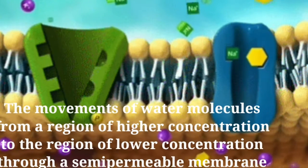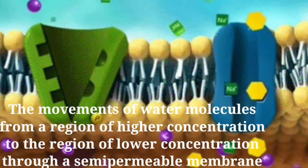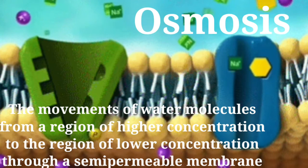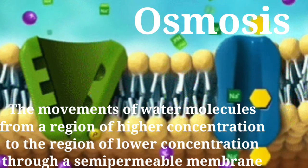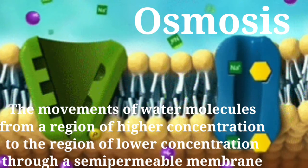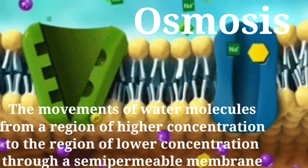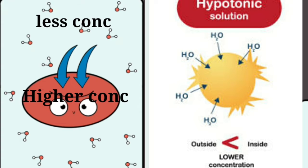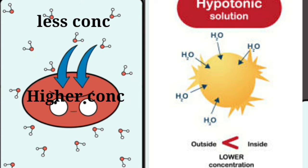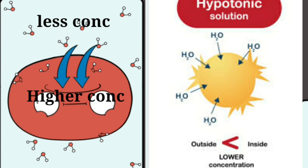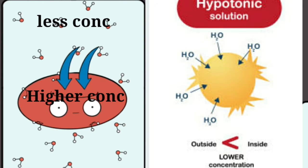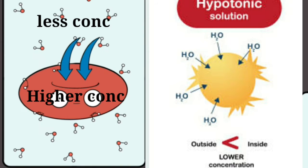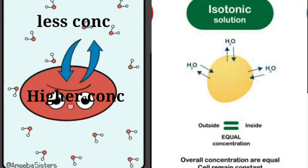The movement of water molecules or liquid through such a selectively permeable membrane is called osmosis. Osmosis is the passage of water from a region of higher concentration through a semi-permeable membrane to a region of lower water concentration. If the medium surrounding the cell has a higher water concentration than the cell, the cell will gain water by osmosis. Such a solution is known as a hypotonic solution.